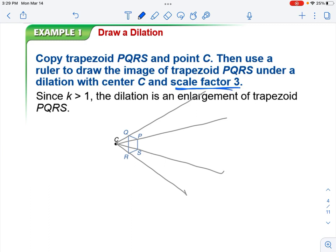So since the scale factor, our K value, is bigger than 1, this is an enlargement. If it was smaller than 1, it would be a reduction. So this new shape is going to be bigger.